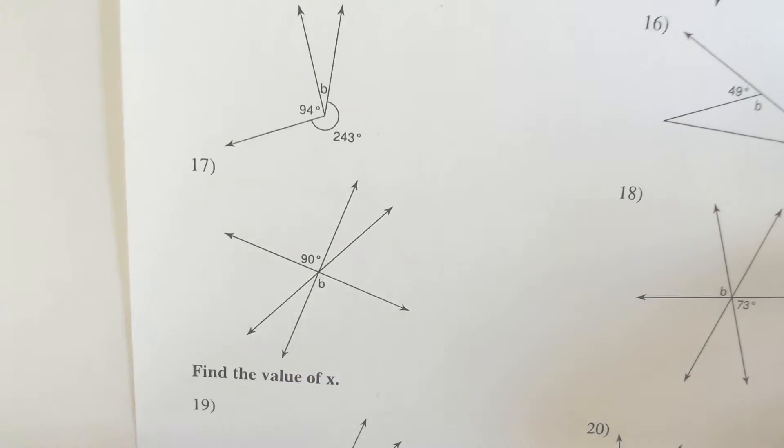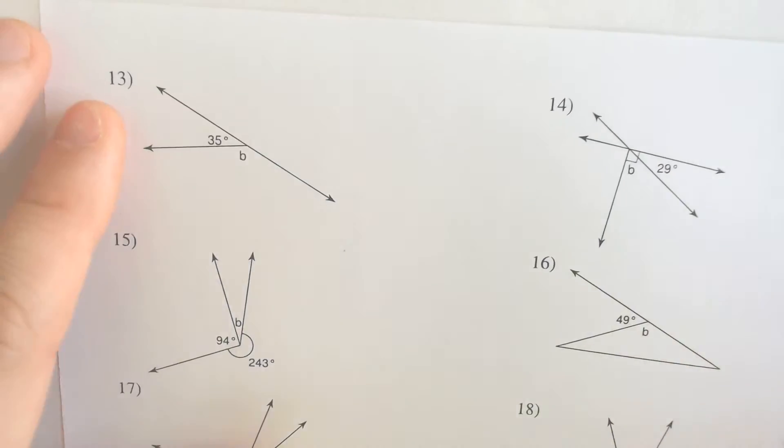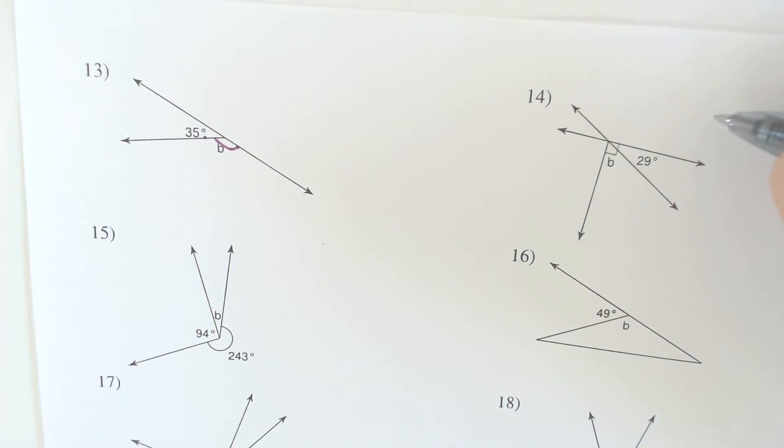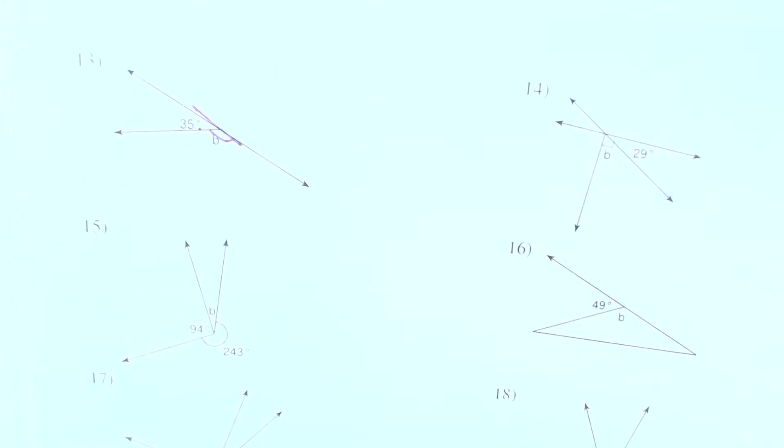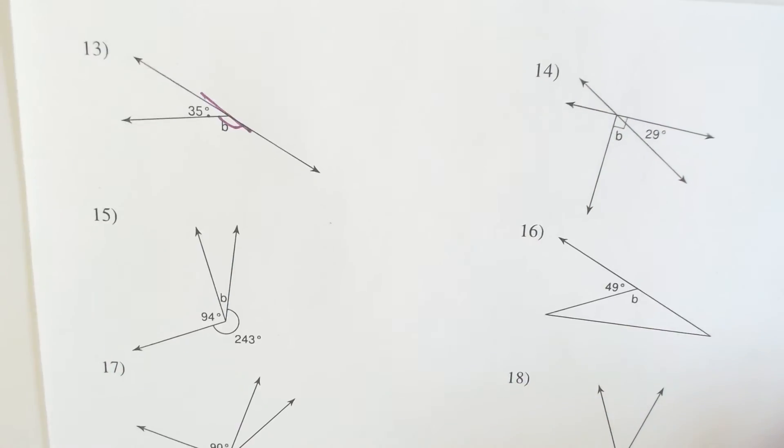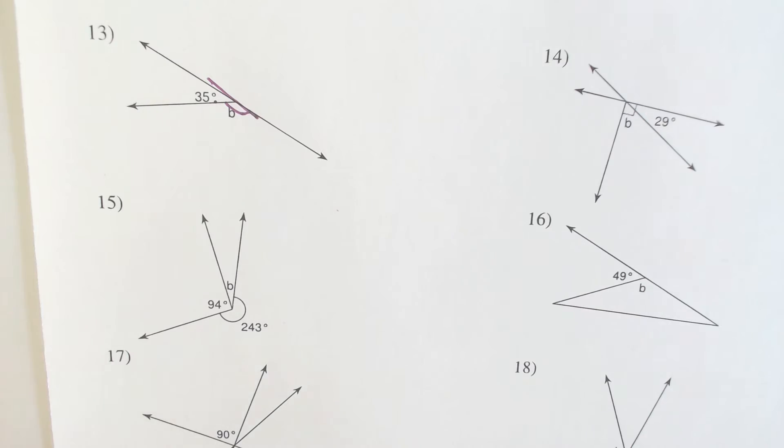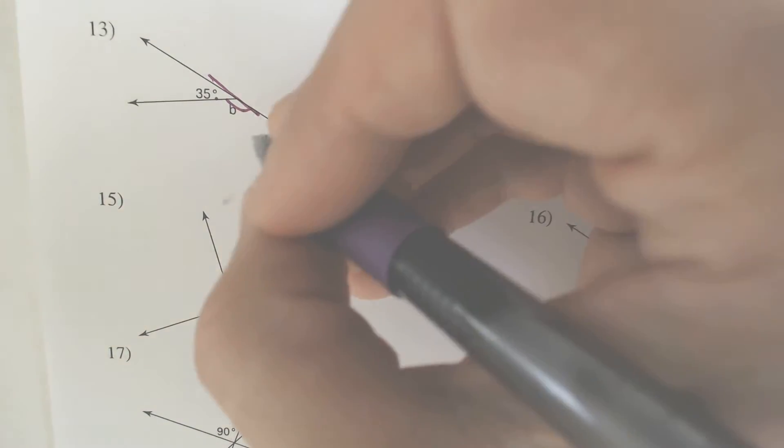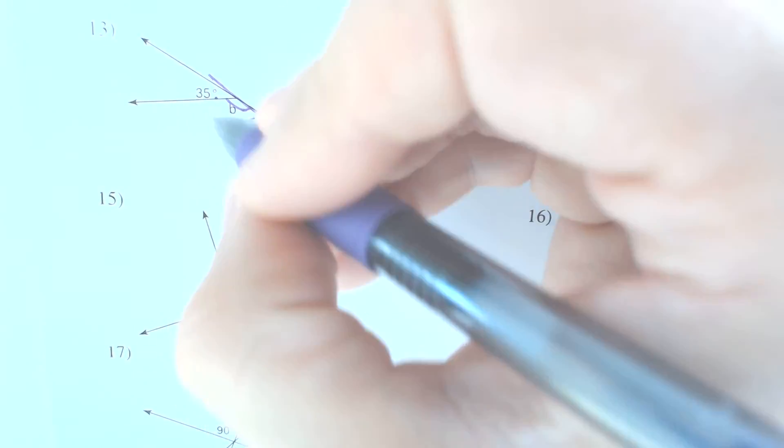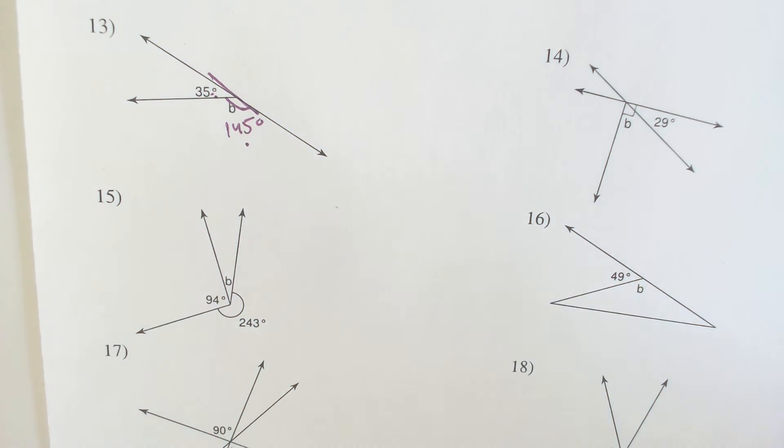Moving right along. We got 35 and what number make 180? Well, because this is a straight line linear pair, it's going to have to add to make 180. And if we take 180 and subtract 35, you get 145, which makes sense because 145 and 35 make 180.